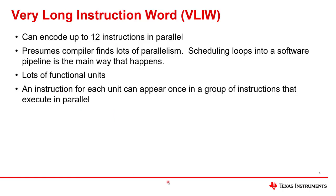A C7000 is often described as a VLIW machine — that stands for Very Long Instruction Word. It means you can encode a lot of instructions in parallel; in this specific case, 12 instructions in parallel. This is done on the presumption that the compiler will find lots of parallelism when building the code, and the main way that happens is by scheduling the loops into a software pipeline. That's why later in this video series, we have multiple videos planned on the topic of software pipelining.